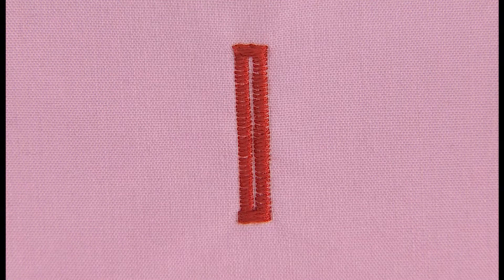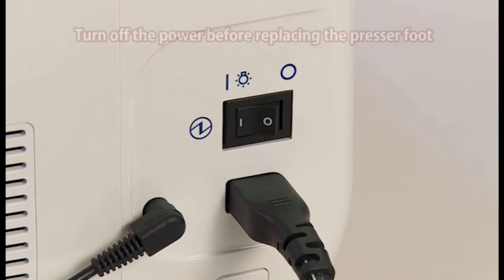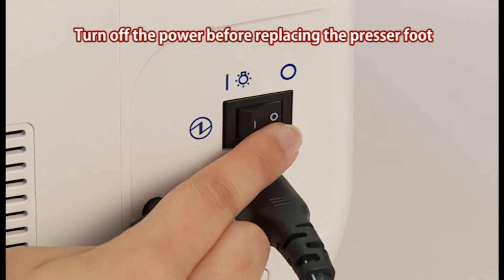We'll use this buttonhole stitch as an example. Use the buttonhole presser foot E for this stitch. Turn off the power switch before replacing the presser foot.